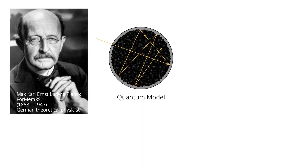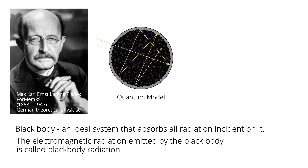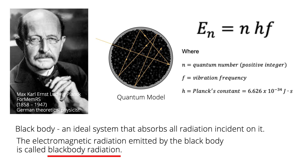Meanwhile, in 1900, Max Planck developed a theory of black body radiation, to describe the distribution of energy from a black body by its intensity or power per unit area. A black body is defined as an ideal system that absorbs all radiation incident on it. The electromagnetic radiation emitted by the black body is called black body radiation. Under this theory, the energy of an oscillator can only have certain discrete values: E sub N equal to N H F, where N is a positive integer called quantum number, F is the vibration frequency, and H is Planck's constant.